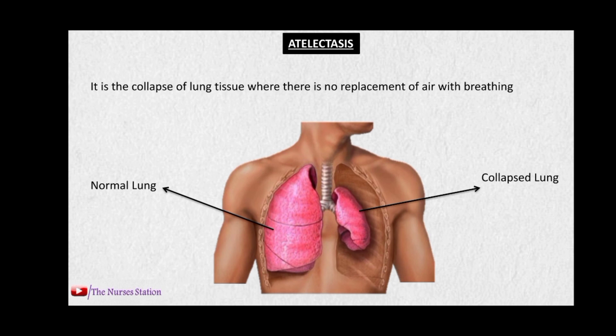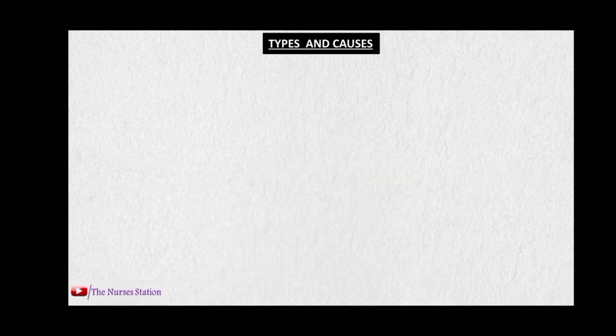Today's video is about atelectasis. Atelectasis is a condition where the lung tissue collapses — it may be part of the lung which collapses or the whole lung may collapse. In the collapsed part there is no replacement of air with breathing, because of the obstruction which prevents the passage of air inside the atelectatic part.